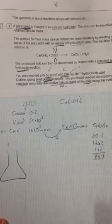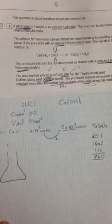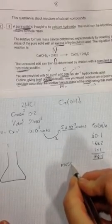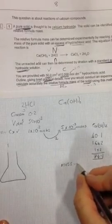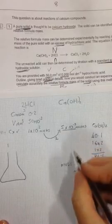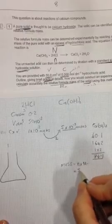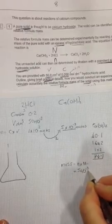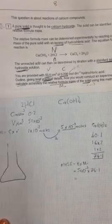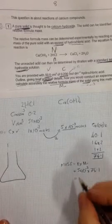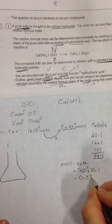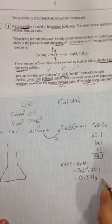Therefore, to work out the mass of the calcium hydroxide, we simply use the equation: the mass of calcium hydroxide is the number of moles times its relative formula mass. We've got the number of moles, times that by its relative formula mass, 74.1, and that will give us the mass that we would weigh out if we were to react all of the HCl, which is 0.371 grams of calcium hydroxide.